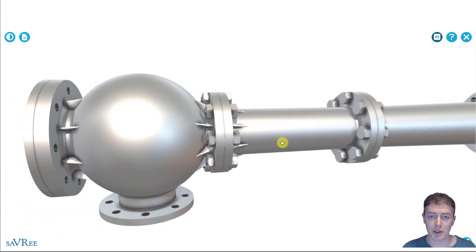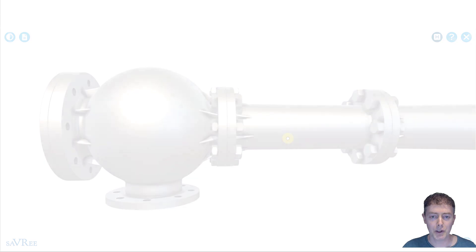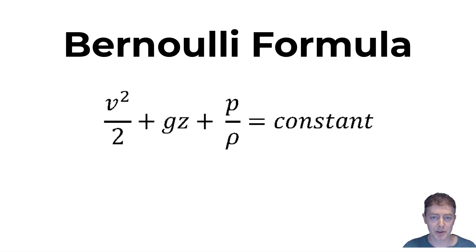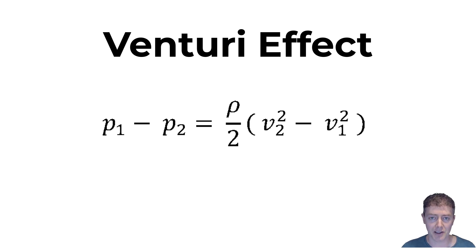Keep in mind that Bernoulli's principle is a fluid dynamic concept. If you look at the equation for Bernoulli's principle, it includes things like pressure, density, speed, and height. When we're looking at the Venturi effect, however, we're focusing upon pressure, density, and velocity — primarily pressure and velocity. The Venturi effect describes the relationship between pressure and velocity within a confined space, such as a pipe.